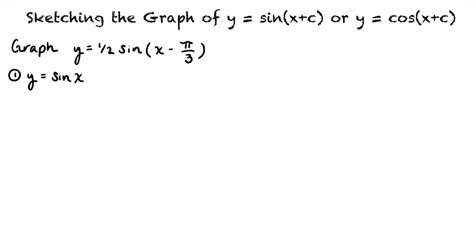To get our first graph, we will find the y values for these key points. By substituting these values for x, we can find that the corresponding y values are 0, 1, 0, negative 1, and 0.